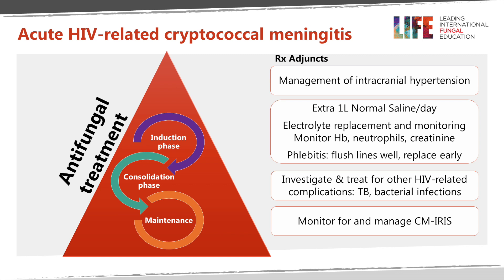It's important to give pre-emptive electrolyte replacement in the form of potassium and magnesium supplements to counteract the electrolyte wasting that occurs with amphotericin B. We must monitor these electrolytes, as well as monitoring hemoglobin because of the significant anemia associated with amphotericin B treatment, monitor the neutrophil count if we are using flucytosine, and monitor creatinine in view of possible renal impairment.